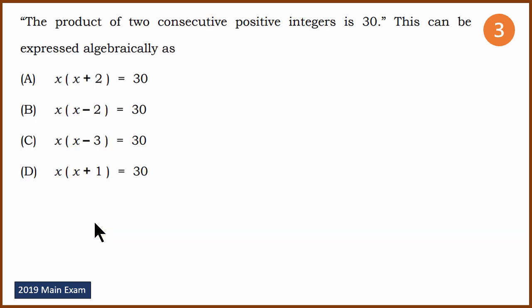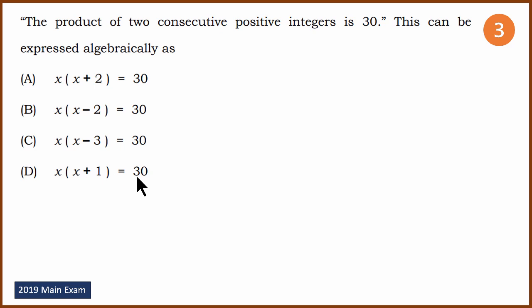Third question: you have to express the problem as an algebraic quadratic equation. The product of two consecutive integers is 30. So the answer is D.